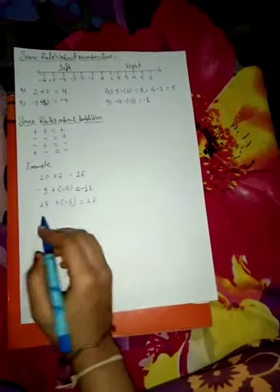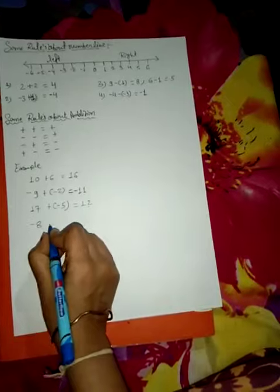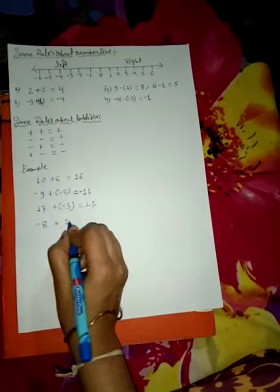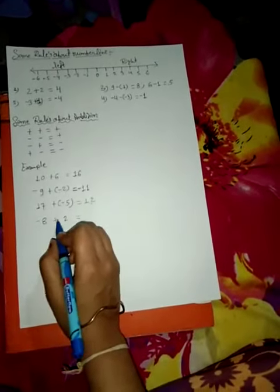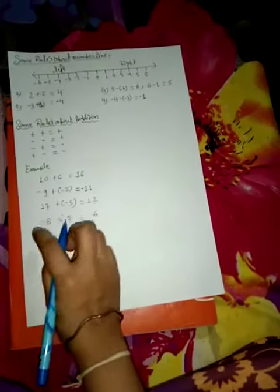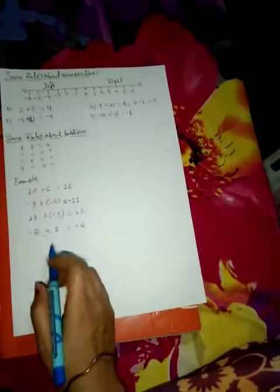Let's consider minus 8 plus 2: a negative number and a positive number. Plus minus is minus, that means 8 minus 2, which is 6. And 8 compared to 2 is bigger, and 8 is negative, so we put the negative sign. This is your class, thank you.